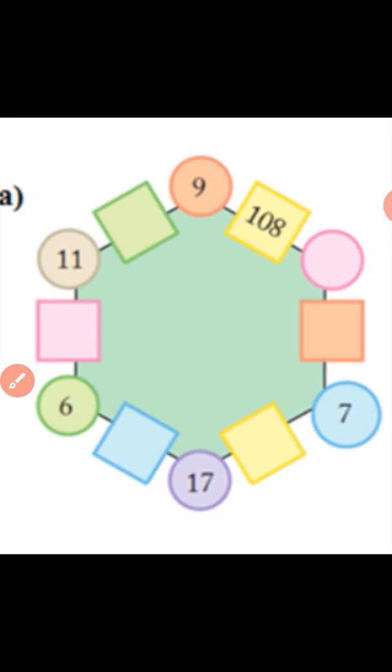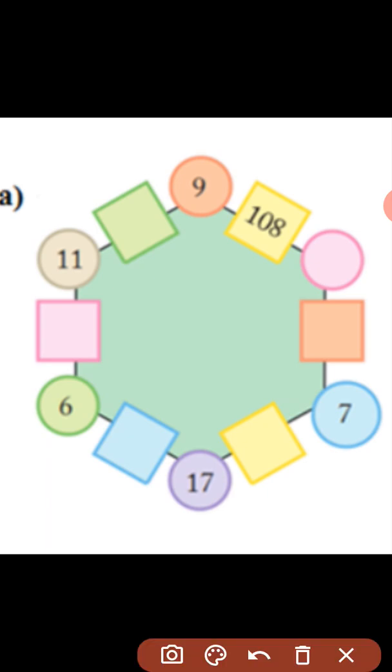Let us see how to fill the boxes or empty spaces in this magic hexagon. First of all let us start from this side which has got two circles 6 and 17. When you multiply the numbers 6 and 17 you will get 102. So the number which should be written inside the box is 102.